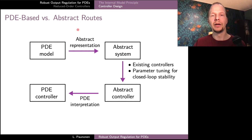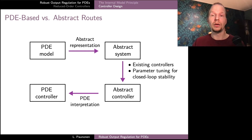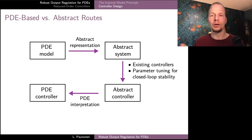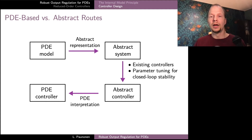In the abstract route, we begin with our original PDE and first find a representation in a suitable class of abstract systems. Once we have this abstract representation, we have access to a large number of different types of controller designs applicable to this class of models. These results typically come with a general structure for the controller along with instructions on how to choose the controller parameters. Starting from PDE models, the problem of choosing these parameters correctly can often be converted into PDE stabilization problems.